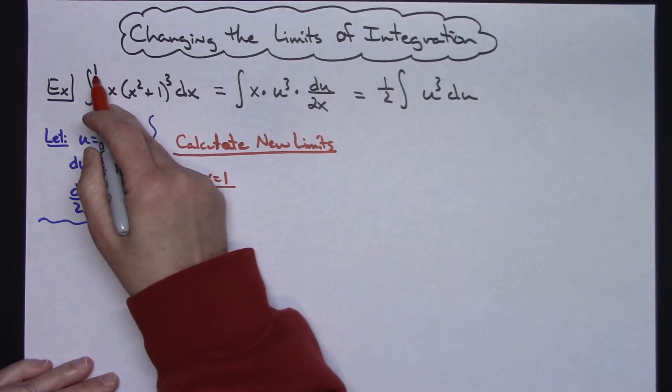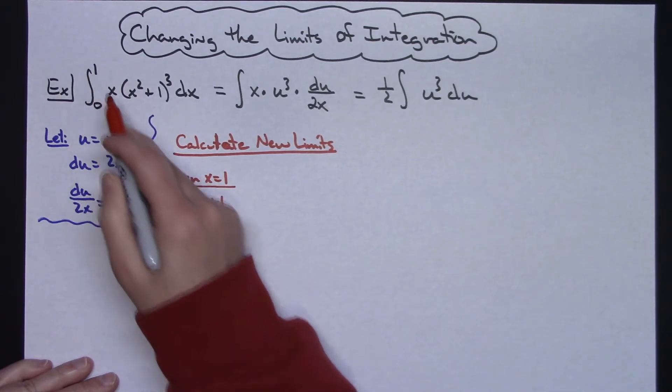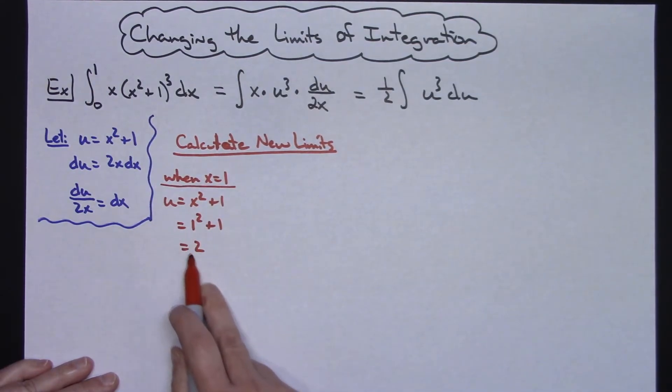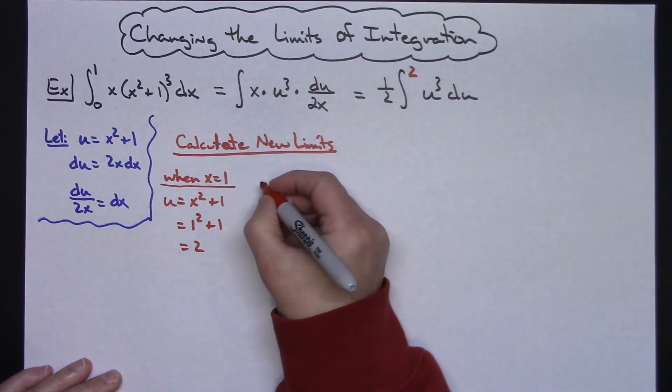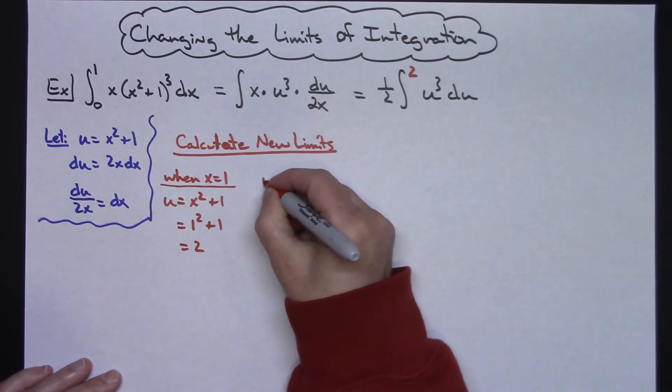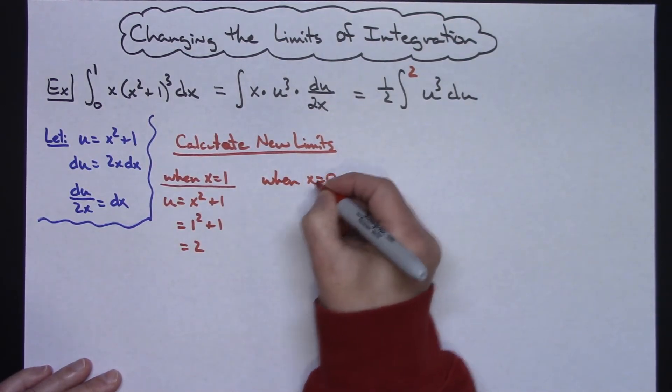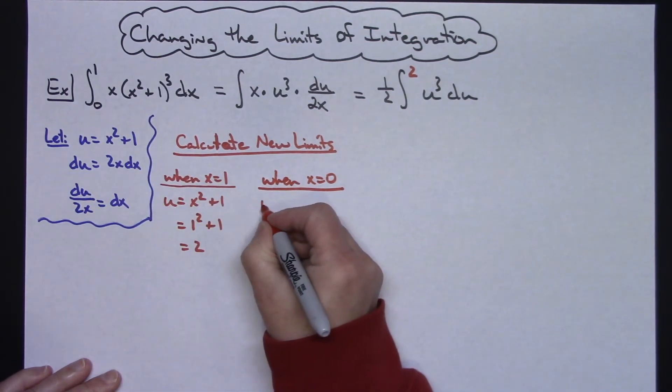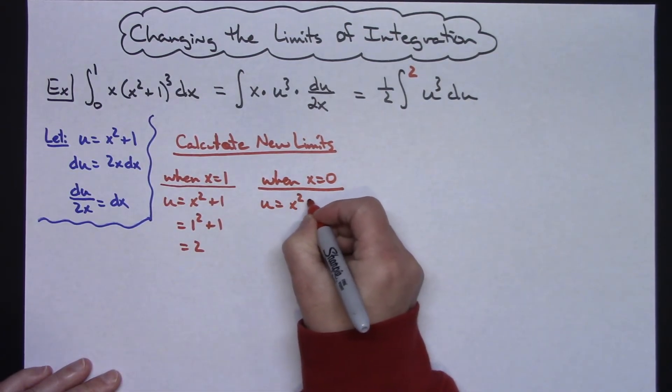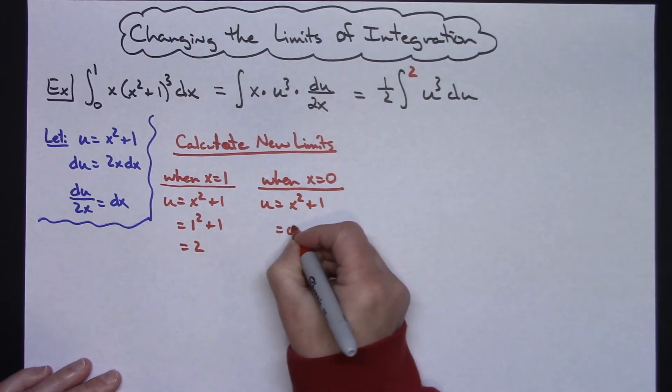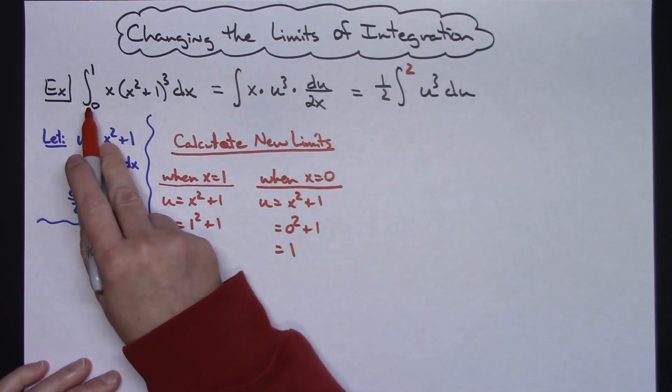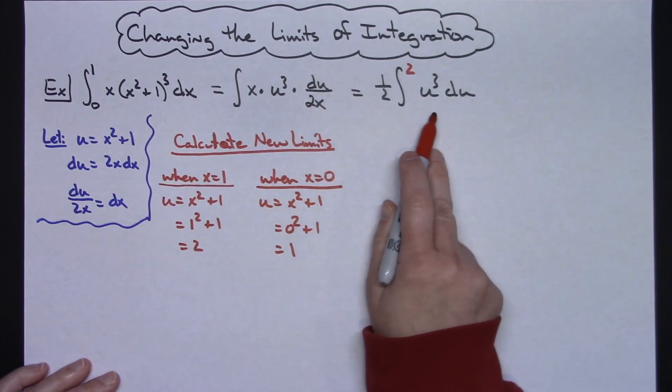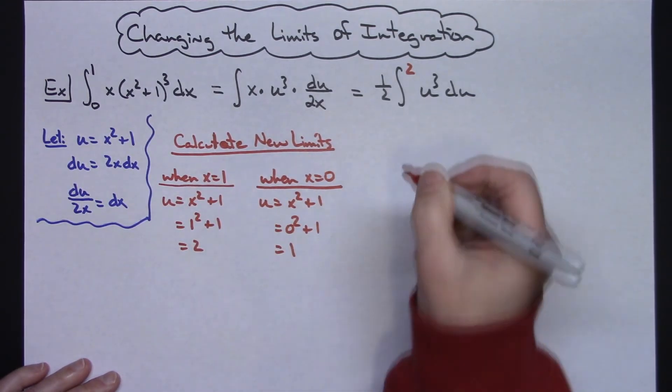So when x equals 1, when my limit of integration for x equals 1, u is equal to 2. So I have a new limit there. Now let's do the bottom one. When x equals 0, I originally said that u is equal to x squared plus 1, replacing that x with 0. 0 squared plus 1. So u is 1. So when my original limit there, limit of integration is a 0, when I have it in terms of u, it's going to be a 1.